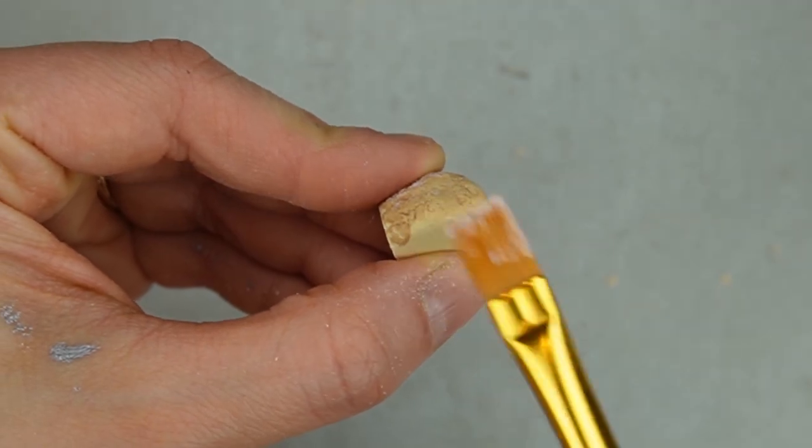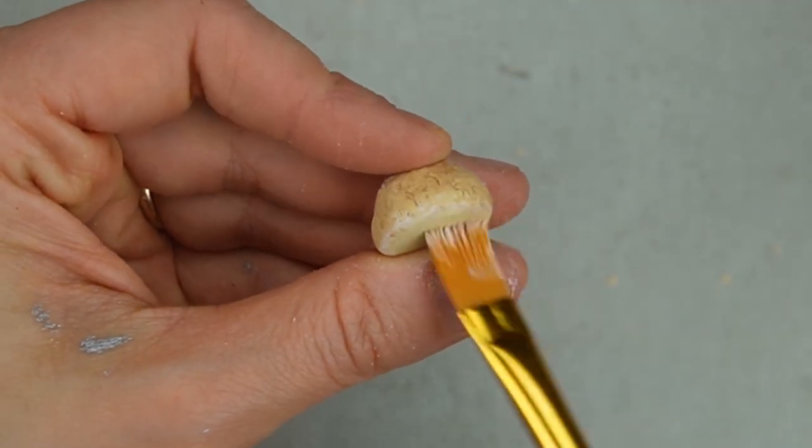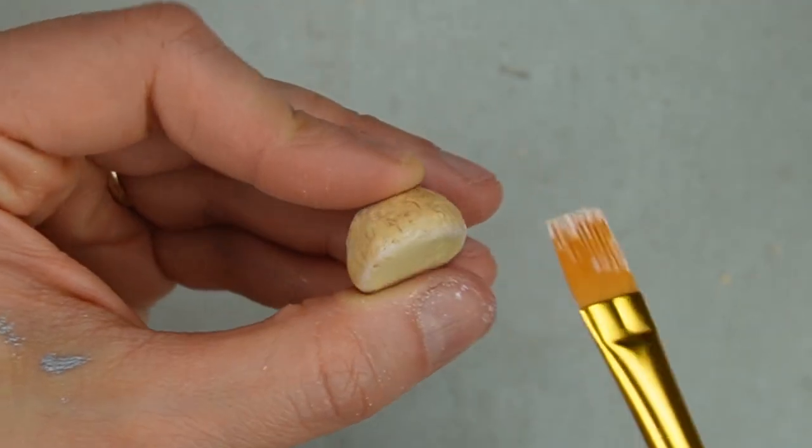I'm using some white acrylic paint to fake the look of flour on the outside of the bread and around the bottom.